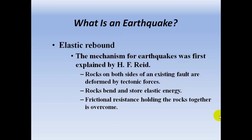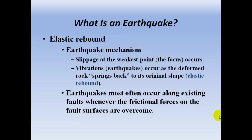Elastic rebound. The mechanism for earthquakes was first explained by H.F. Reid. Rocks on both sides of an existing fault are deformed by tectonic forces. Rocks bend and store elastic energy. Frictional resistance holds the rocks together and then is overcome. In the earthquake, the slippage is at the weakest point — at the focus — and vibrations occur as the deformed rocks spring back to their original shape, called elastic rebound. Earthquakes most often occur along existing faults whenever the friction forces on the fault surface are overcome.